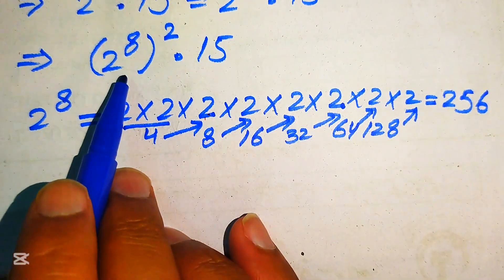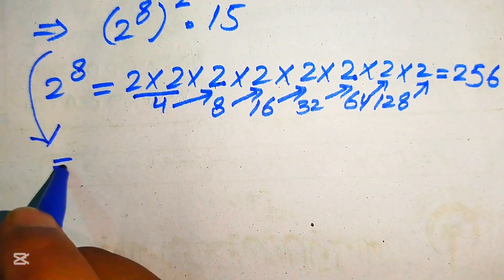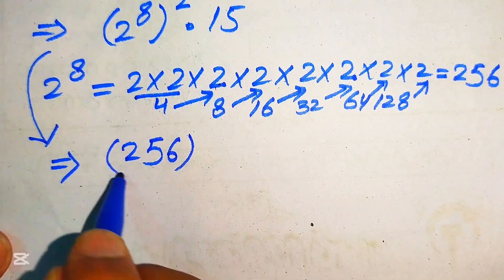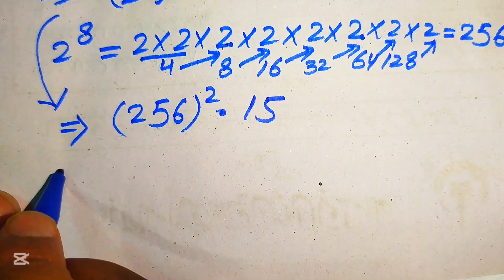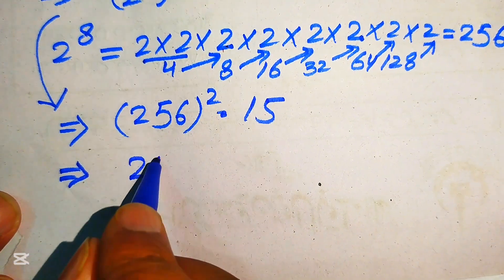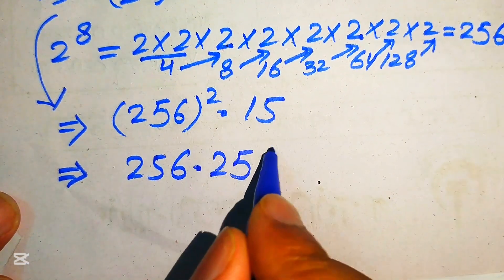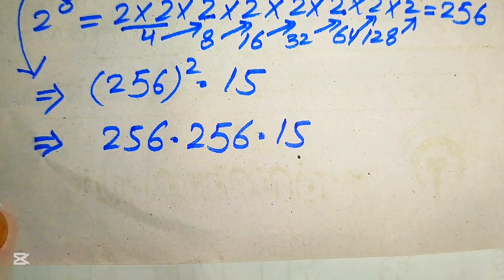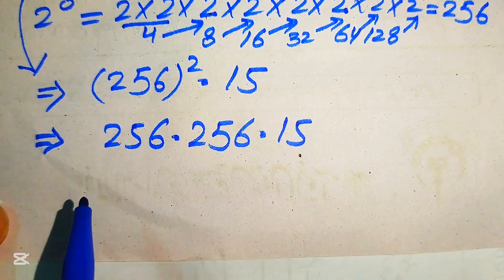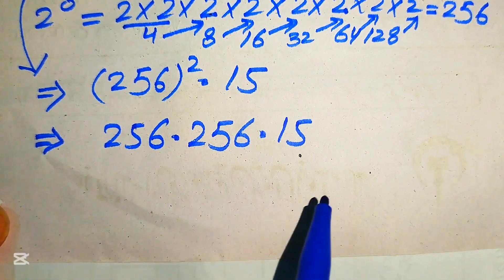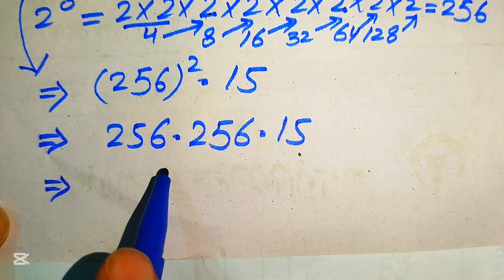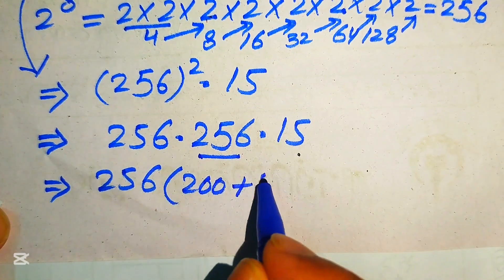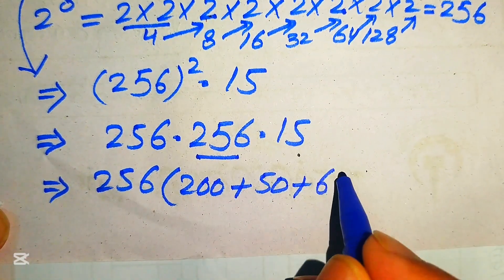We replace 2 to the power of 8 with 256, so the expression becomes 256 squared multiplied by 15. In the next step we write 256 squared as 256 multiplied by 256, and then multiplied by 15. To compute 256 × 256, we break 256 as 200 plus 50 plus 6.